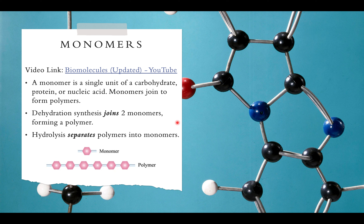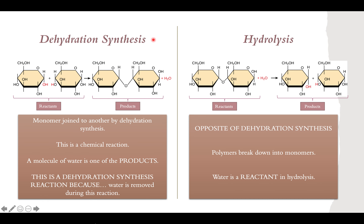It's really important to understand the processes of dehydration synthesis and hydrolysis. In dehydration synthesis, we are adding monomers together to make something new — a polymer. In hydrolysis, we take that larger molecule and break it down into two separate parts. They are literally just the opposite of one another: dehydration synthesis forms, and hydrolysis breaks apart.